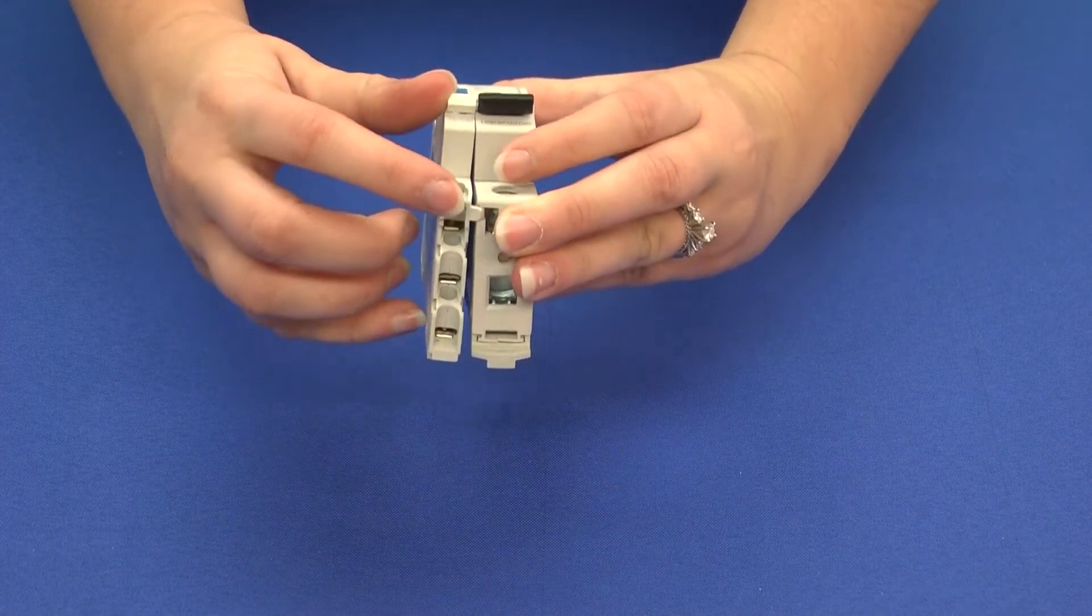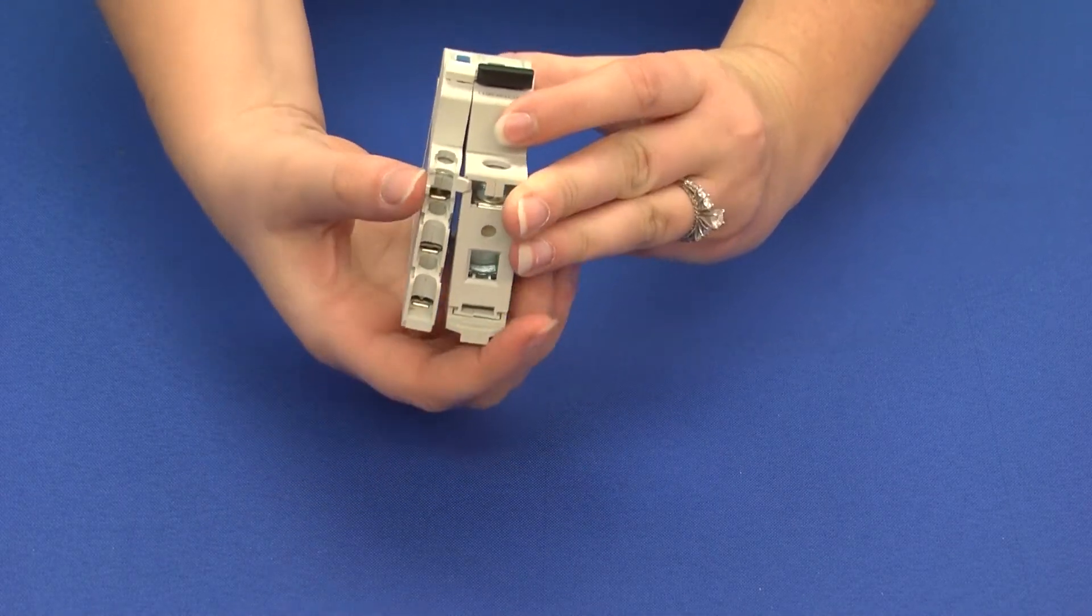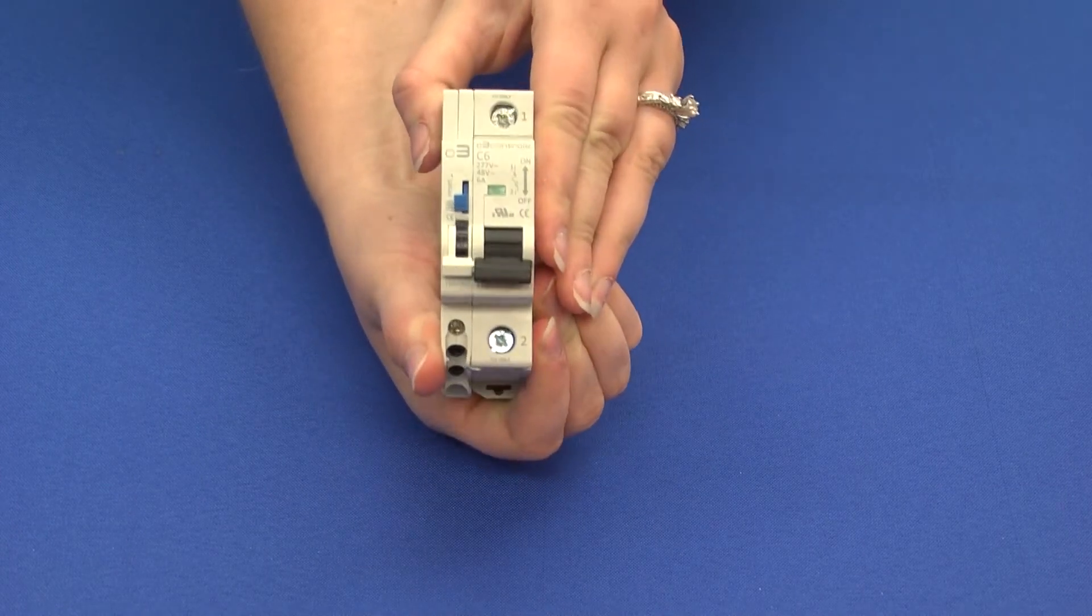And last, align the bottom clip into the notch at the bottom of your MCB and snap everything together.